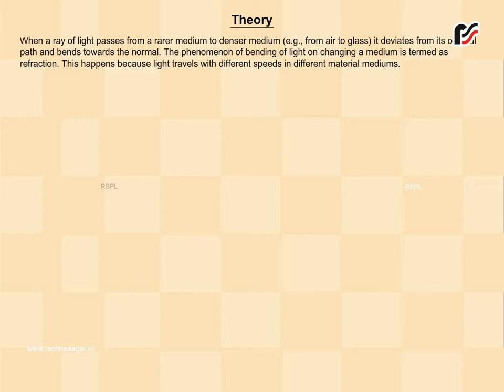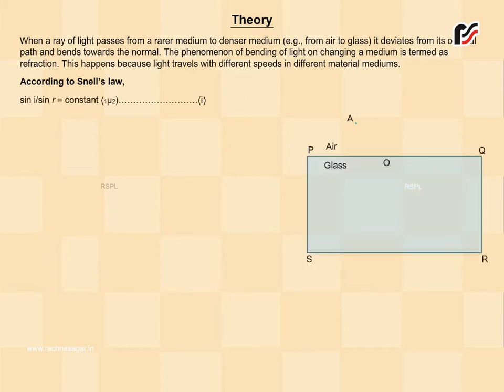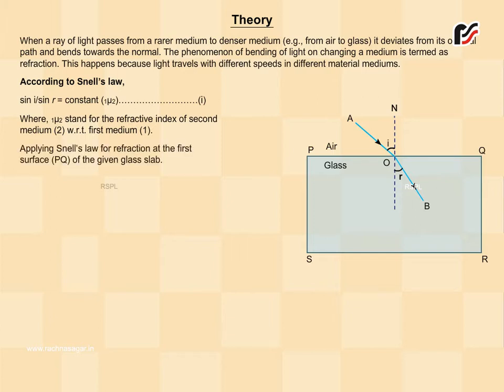This happens because light travels with different speeds in different material mediums. According to Snell's Law, sin i upon sin r equals constant ₁μ₂, where ₁μ₂ stands for the refractive index of second medium with respect to first medium. Applying Snell's Law for refraction at the first surface PQ of the given glass slab.